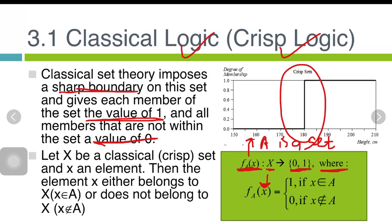If x is an element in A, then the function will return one. If x is not an element in A, then the function will return zero.